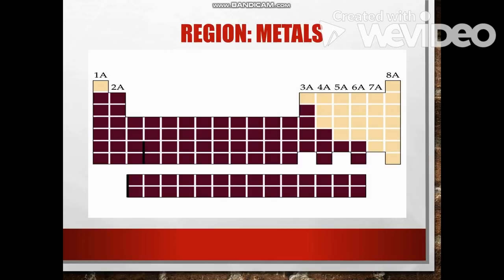On the left side and bottom of the periodic table, and some elements on the right, are classified as metals. Metals are good conductors of heat and electricity, are shiny, and are ductile — meaning they can be stretched into thin wires, for example copper. Metals are also malleable, meaning they can be pressed into thin sheets. A key chemical property of metals is their reaction with water, which results in corrosion.